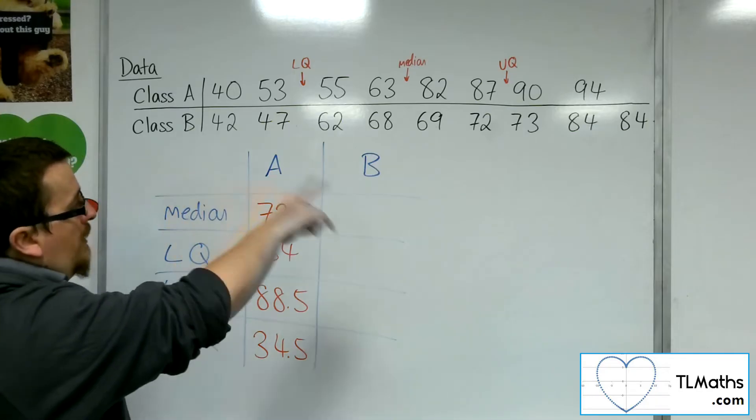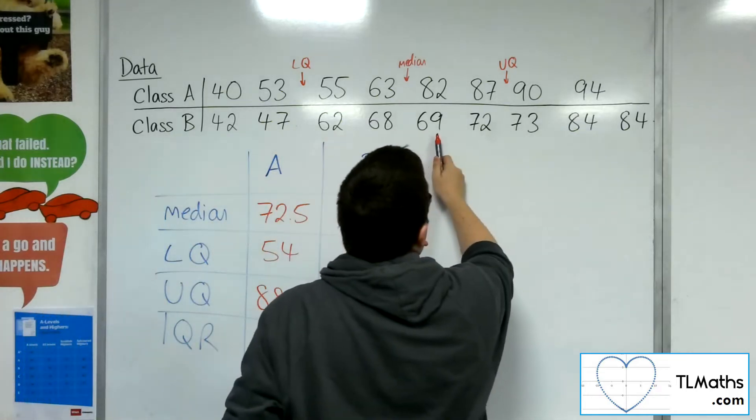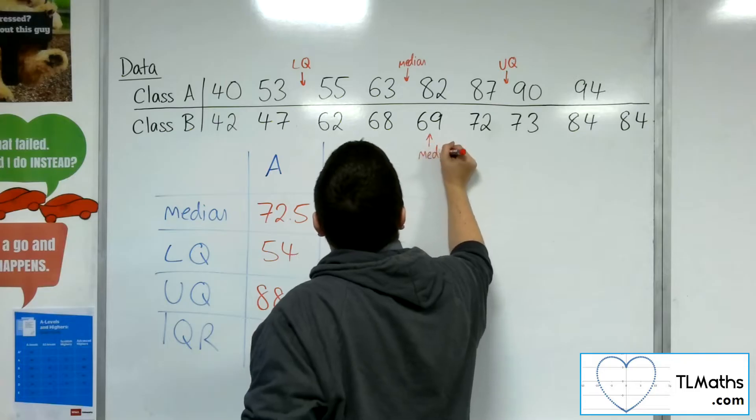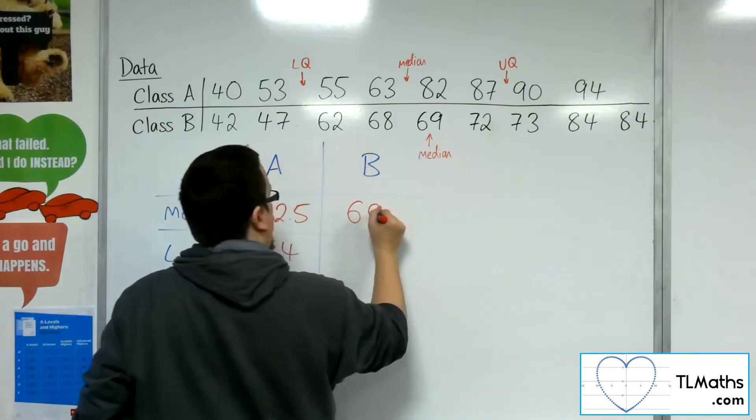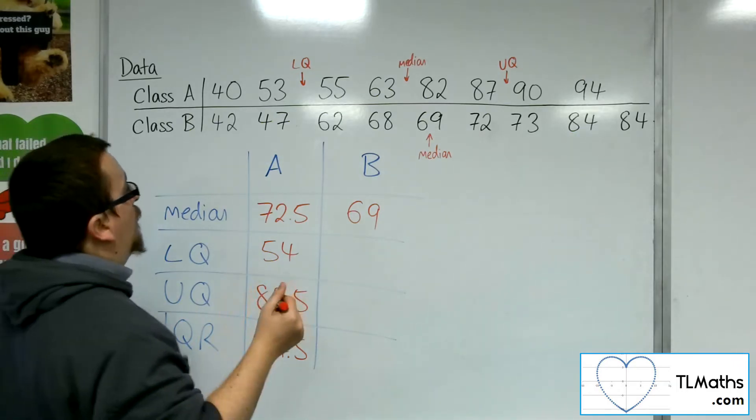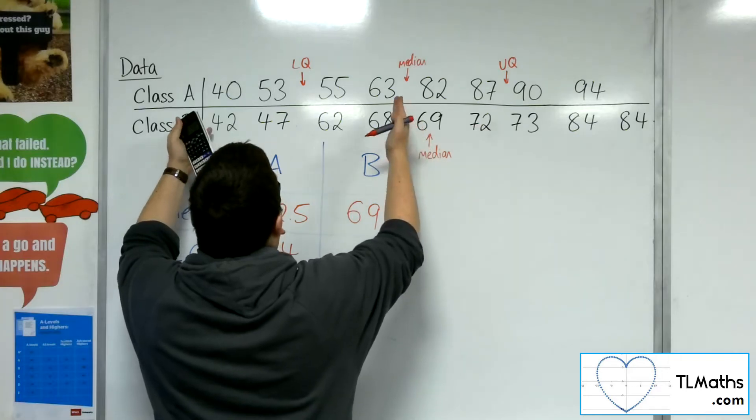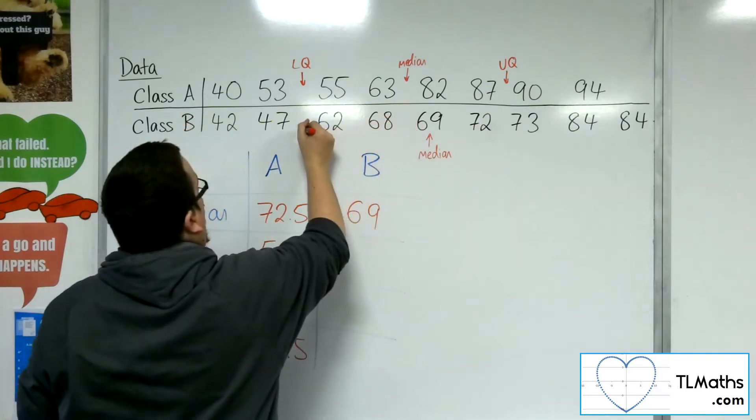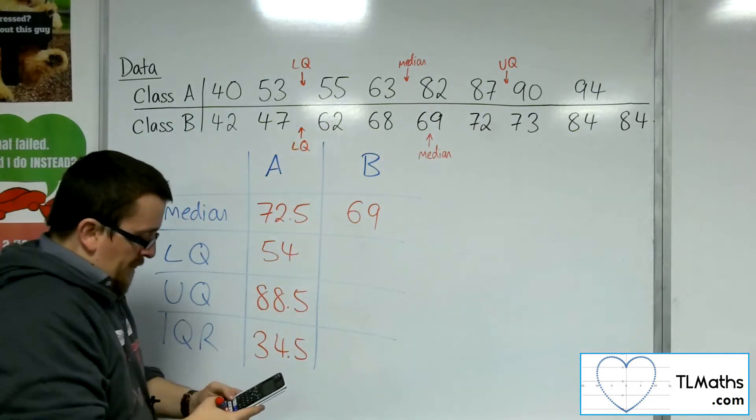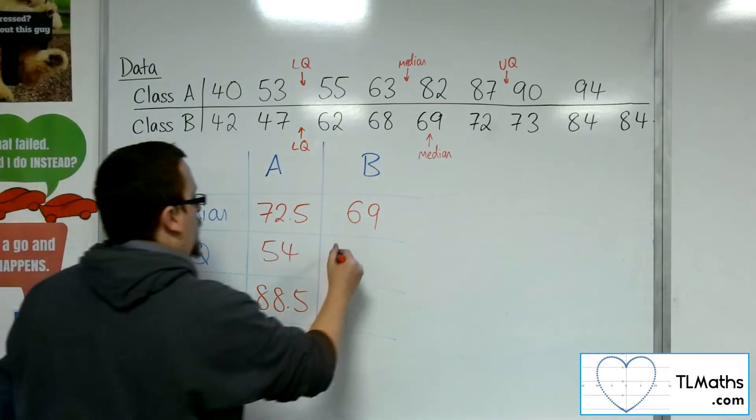So we've got nine bits of data, so the median is going to be the middle value, which is going to be that 69 there. So this is the median value. Now the lower quartile is the median of the bottom half, excluding the median that's already been found. So the median of those four numbers, so halfway between 47 and 62. So 47 plus 62 divided by 2 is 54.5.